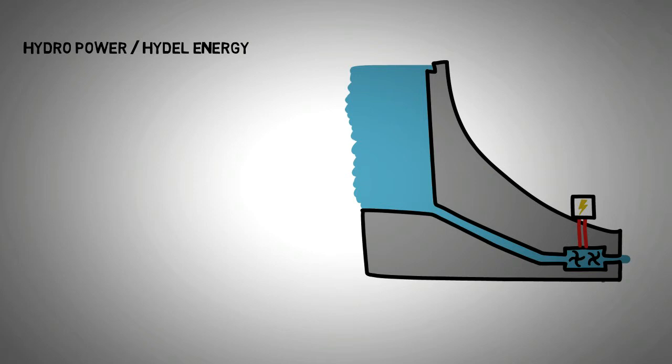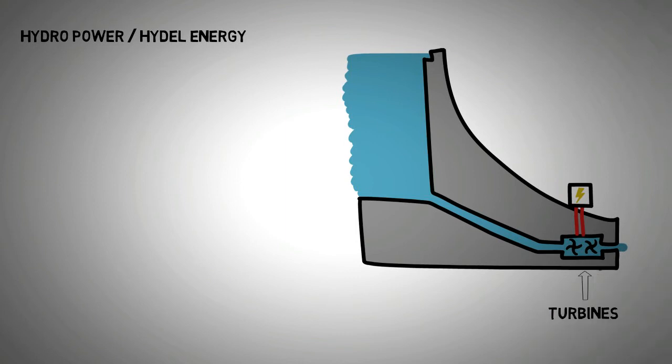The process of hydropower generation requires creating a barrier in the path of flowing water. The water is channeled and made to drop where its potential energy is converted into kinetic energy, and this energy is then extracted by means of a turbine.